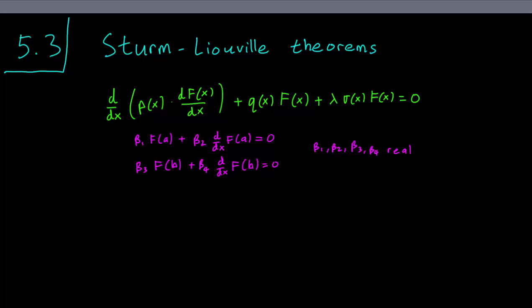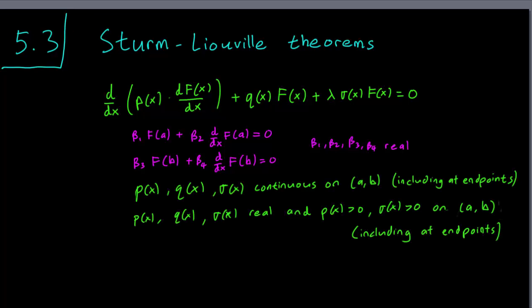As you can see this covers the Neumann, the Dirichlet and the Robin boundary conditions we discussed in the previous video if we pick the betas correctly. We are also going to insist that p, q and sigma are continuous functions on a, b and that the continuity extends to the endpoints as well. The p, q and sigma are real and we also insist for the p and sigma that they be positive everywhere including at the endpoints a and b.